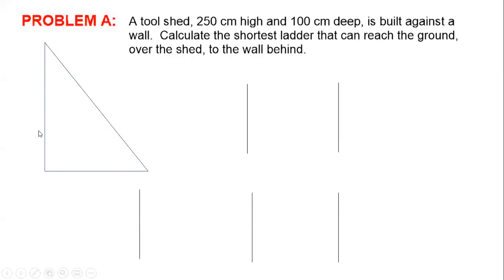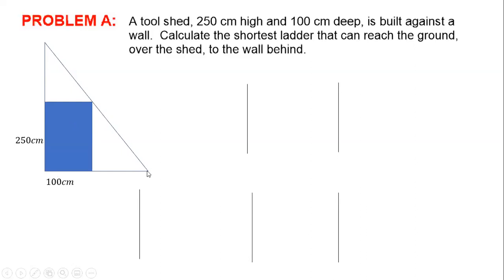Here's what I'm going to represent this situation with. This is the ladder, this is the wall it's leaning up against, and then we have the shed. That shed has to be inside here — think of this blue rectangle as the shed. The shed has certain dimensions: it's 250 centimeters high and 100 centimeters along the ground — that's what 'deep' means. This ladder needs to go over that shed and reach the wall. I'm going to fill out this diagram a bit more. The rectangle means both sides share the same dimensions — 100 cm on both horizontal sides, 250 cm on both vertical sides.